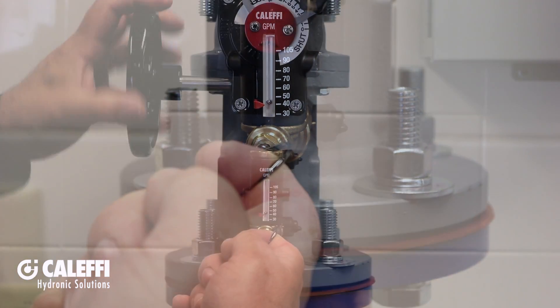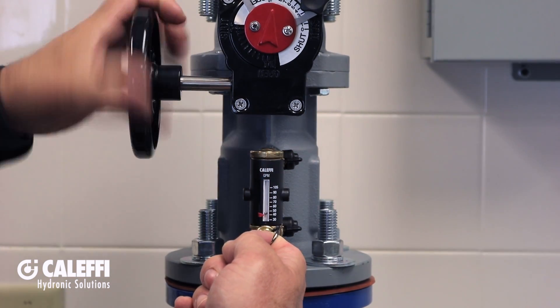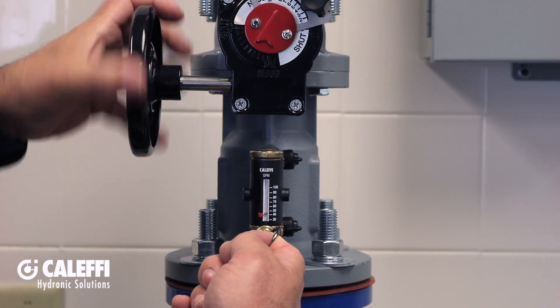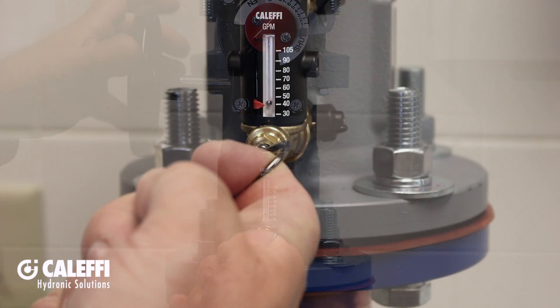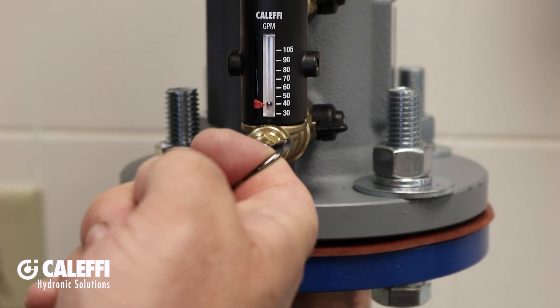I'm going to just adjust my hand wheel until the flow indicator bead aligns with the design flow rate pointer. When they match, release the pin and the circuit is balanced.